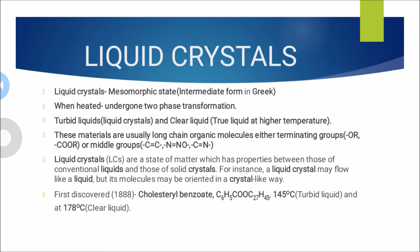This kind of liquid crystal material was first discovered in the year 1888. Cholesterol benzoate is the first material which was discovered. It has the molecular formula C6H5-COO-C27H45, with a transition temperature of 145 degrees Celsius and a melting temperature of 178 degrees Celsius.